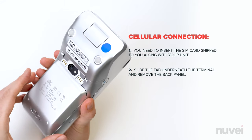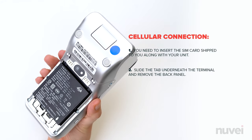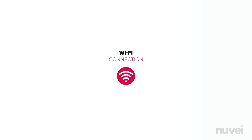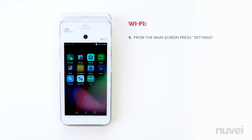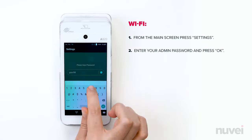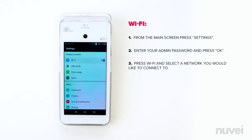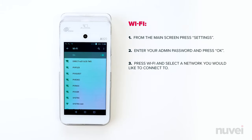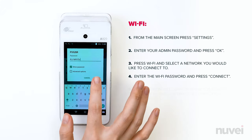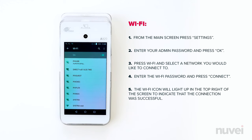Slide the tab underneath the terminal and remove the back panel. Insert the SIM card in the left slot under the battery. From the main screen, press Settings. Enter your admin password and press OK. Press Wi-Fi and select the network you would like to connect to. Enter the Wi-Fi password and press Connect. The Wi-Fi icon will light up in the top right corner of the screen to indicate the connection was successful.